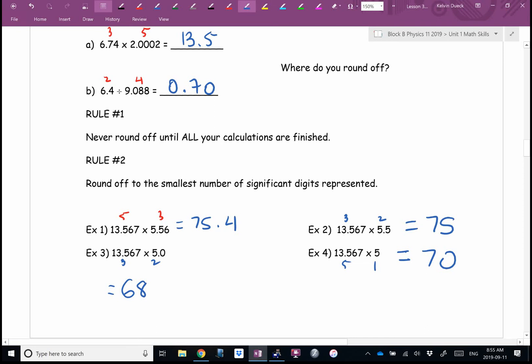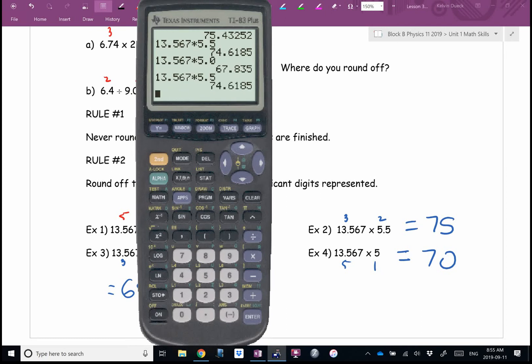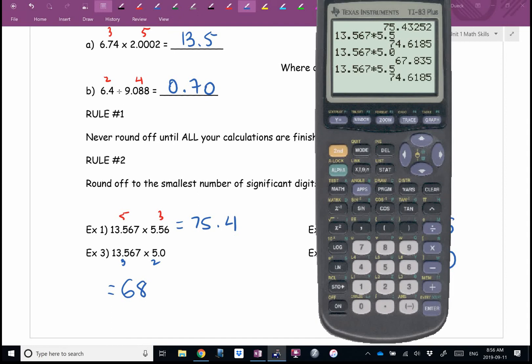Logan, which one are you wondering about? Example two. So 13.567 times 5.5, two sig figs. What's next to the four? To the right of the four. What number is to the right of the four? Four. So this gets bumped up to a five. Number one: five sig figs, three sig figs, I'm going to go to three sig figs. Typed it in wrong. One sig fig is the seven, second sig fig is the five, third sig fig is the four.